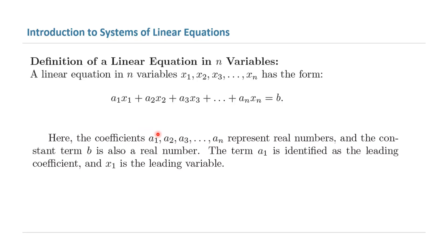The coefficients a sub 1, a sub 2, a sub 3, and a sub n represent real numbers. And the constant term b is also a real value. The term a sub 1, which is located here, is identified as the leading coefficient and x sub 1 is called the leading variable.